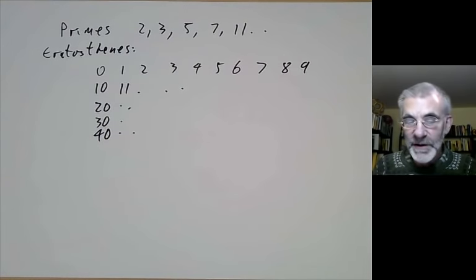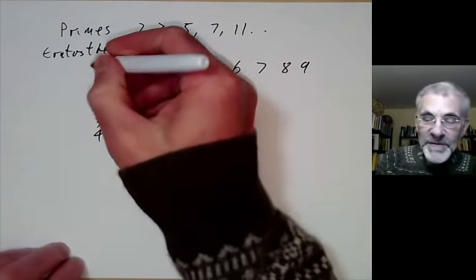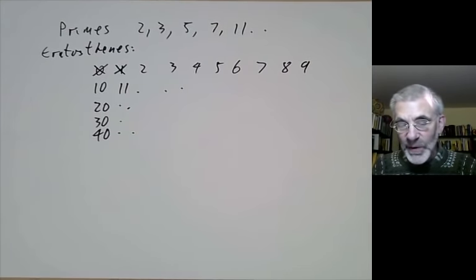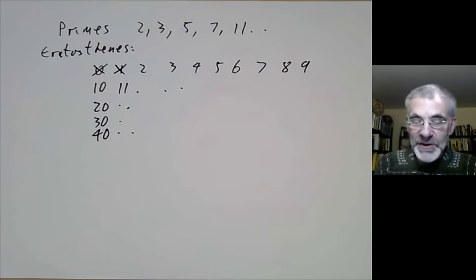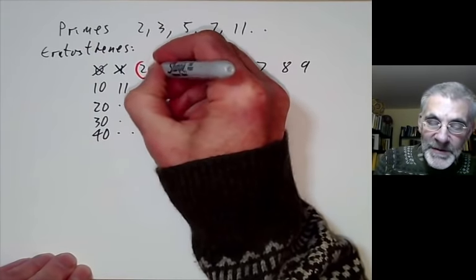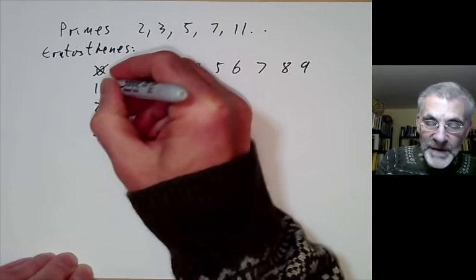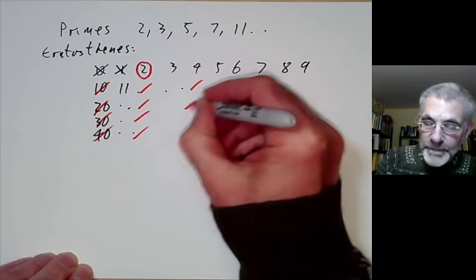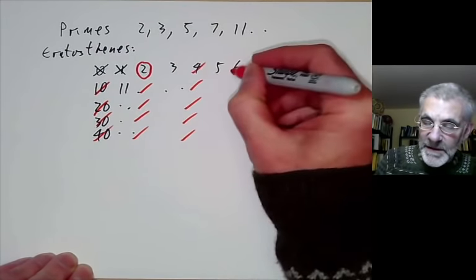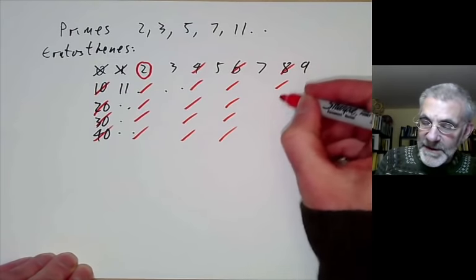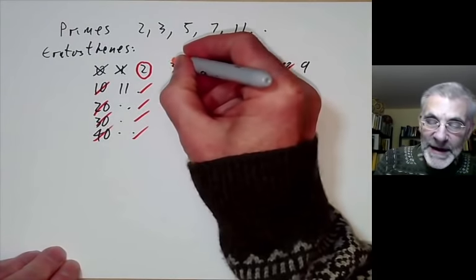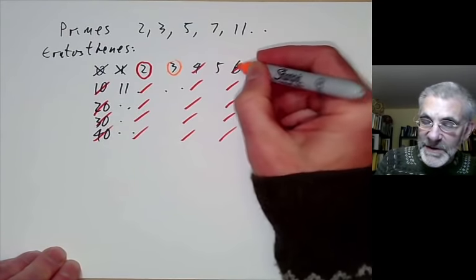You cross off all the ones that aren't prime. First of all, 0 and 1 don't count because 0 is 0 and 1 is a unit. The first number you haven't crossed out is 2. So we write down 2 as a prime and we then cross off all the multiples of 2, because these can't be prime. The first number not on this list is 3, so 3 is our next prime and we now cross off all multiples of 3.